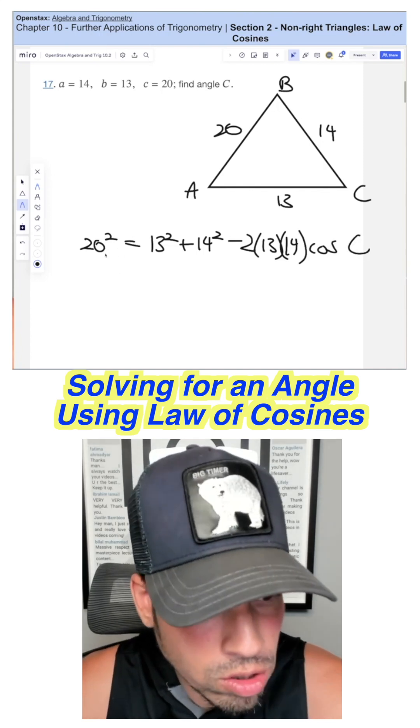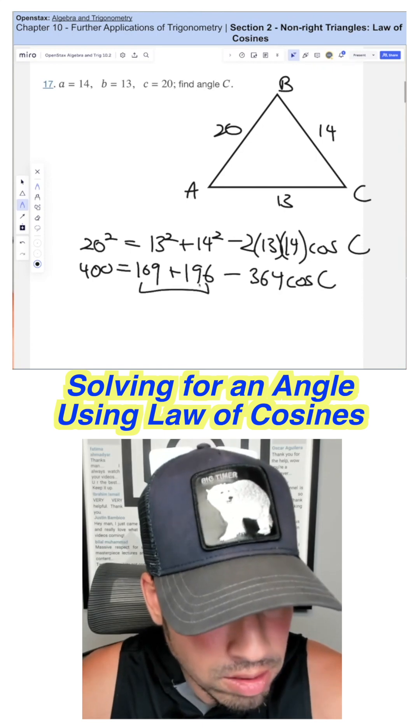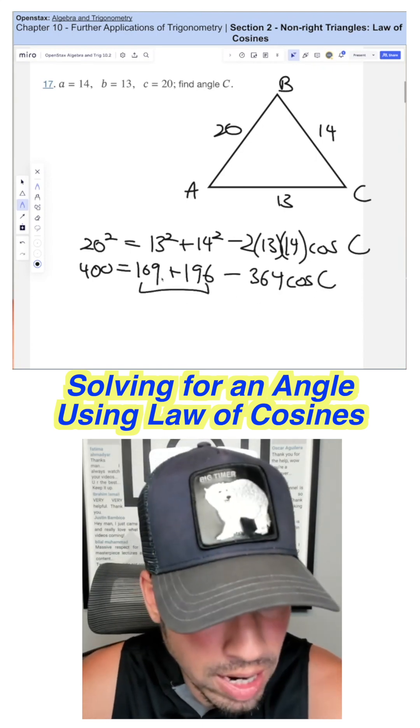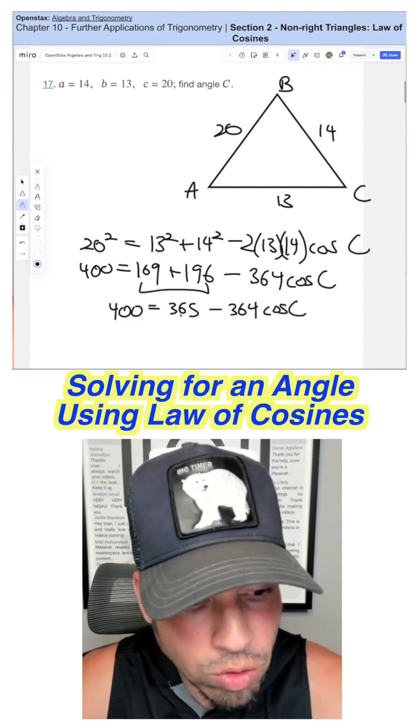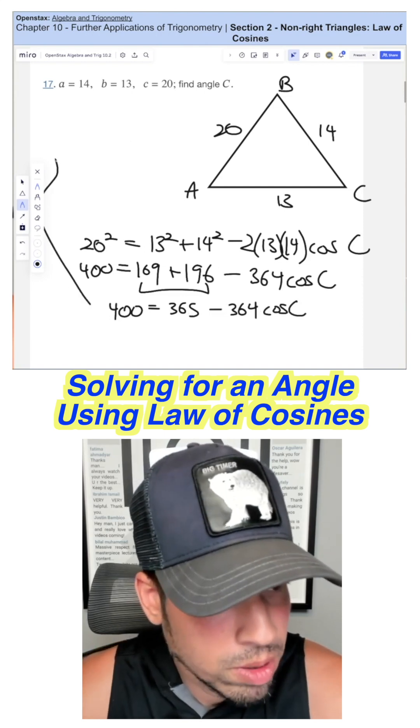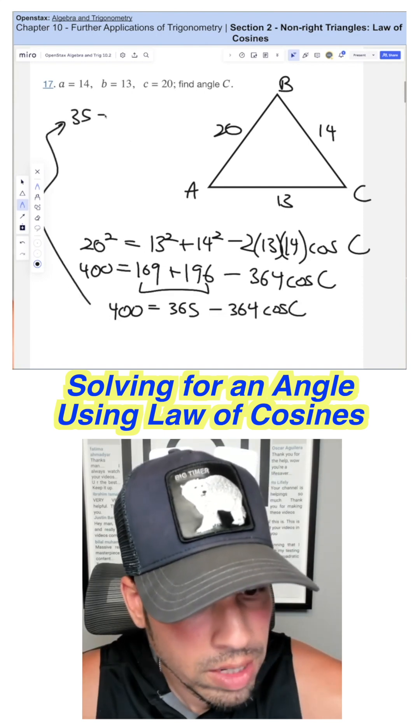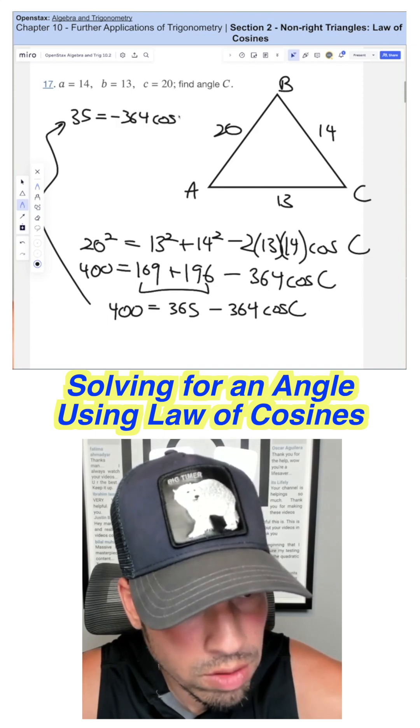Now we can start to solve. We're just basically isolating and solving for C. We're going to add these together, then we're going to subtract 365 from both sides. Let's go up here. We get 35 equals negative 364 cosine of C.